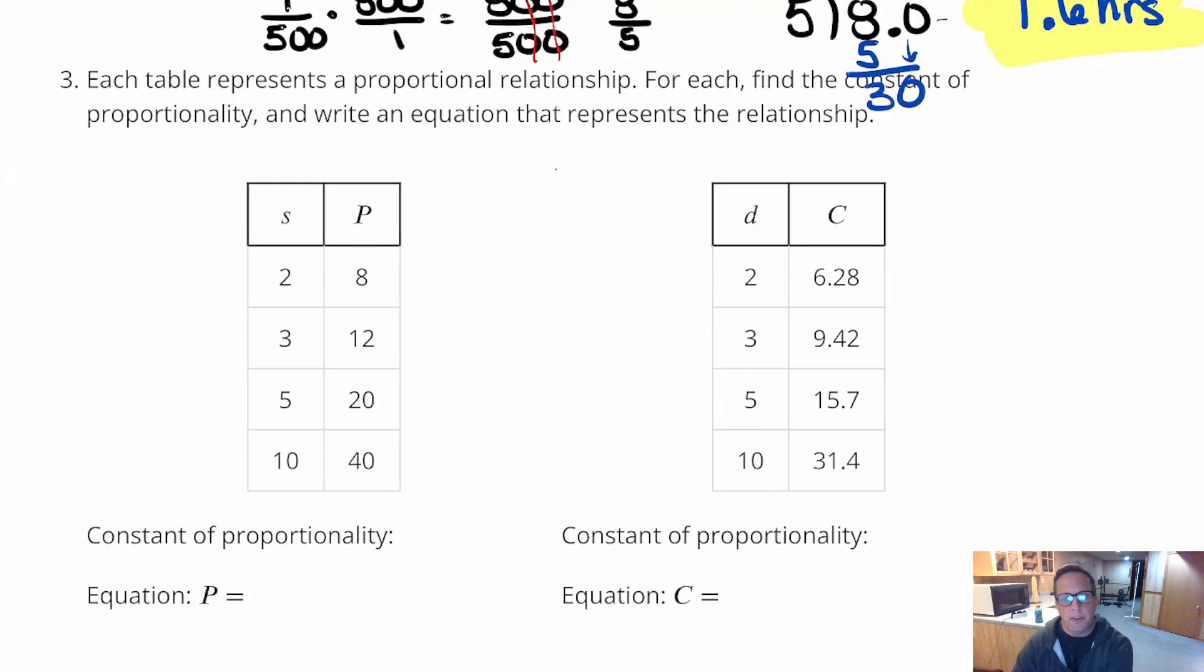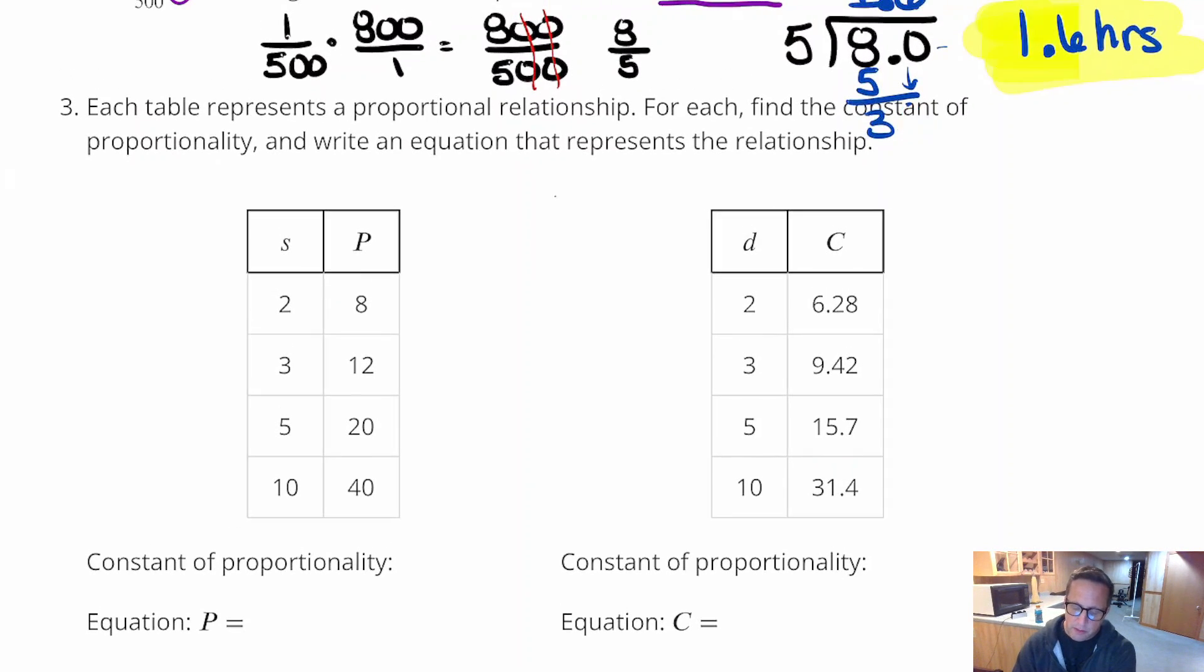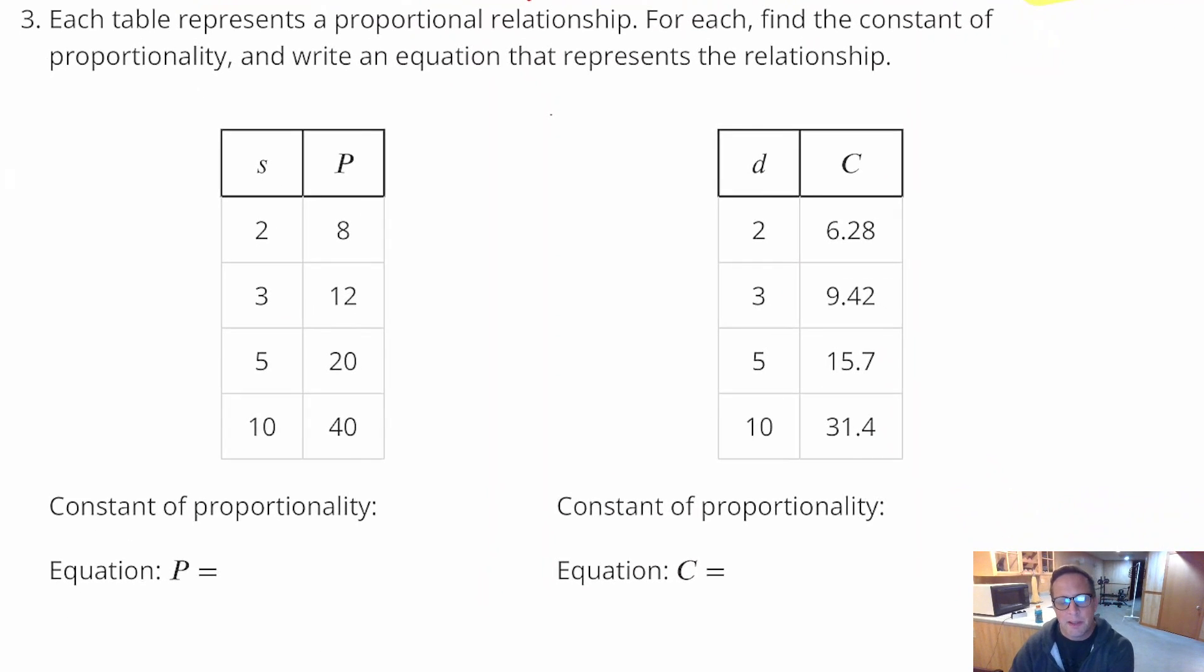Number 3, it says each table represents a proportional relationship. Alright, so that's given. For each, find the constant of proportionality and write an equation that represents the relationship. Alright, now it says it's proportional. So we really don't have to check everything. I mean, if you are checking proportionality, you would check every value. But we can do that, actually, for this. Because it says so. It says that these are proportional.